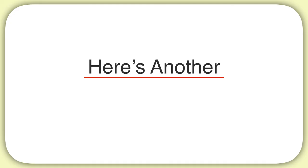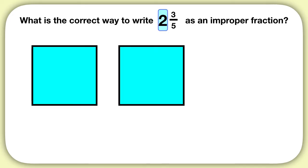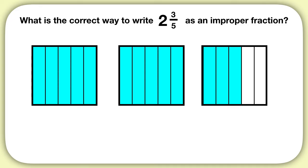Let's practice one more together. What is the correct way to write 2 and 3 fifths as an improper fraction? First we're going to draw this out. I'll draw 2 wholes as 2 squares, and then 3 fifths more, like this. Now to write it as an improper fraction, we're going to get rid of these 2 wholes. This time we're working with fifths, so I will split my wholes into fifths.